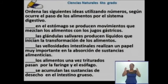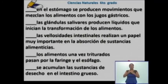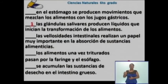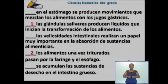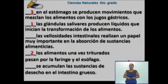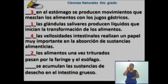Estoy seguro que ya todos resolvieron junto a sus familiares el ejercicio. La primera idea organizada fue: las glándulas salivares producen líquidos que inician la transformación de los alimentos. La segunda: los alimentos una vez triturados pasan por la faringe y el esófago. La tercera: en el estómago se producen movimientos que mezclan los alimentos con los jugos gástricos. La cuarta: las vellosidades intestinales realizan un papel muy importante en la absorción de sustancias alimenticias. Y la última: se acumulan las sustancias de desecho en el intestino grueso.